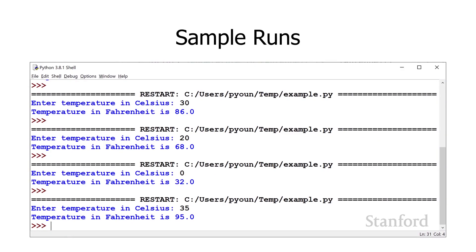Let's go ahead and run this program a bunch of times. Each time it asks us: please enter the temperature in Celsius. At the top I said it was 30 degrees, and it said the temperature in Fahrenheit is 86. I reran it and said 20 degrees — it said 68 in Fahrenheit. If the temperature in Celsius is zero, that means the temperature in Fahrenheit is 32, and so on. So we've created our first program, and you can see that once we've written it, it's super easy to use — much easier than retyping that formula over and over again. If the formula were more extensive, it would save us even more time.